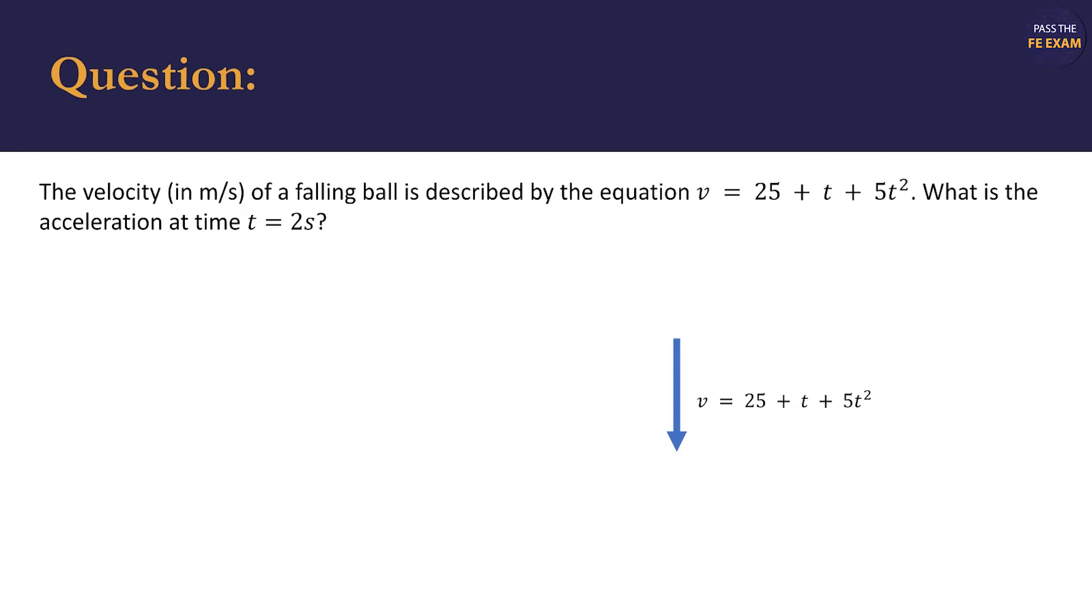We should also realize that the velocity equation for an object in freefall subject to Earth's gravity is a linear equation, v equals g times t, where g is the gravitational constant and t is time. Our situation doesn't fit, so we should be very wary of making those assumptions.